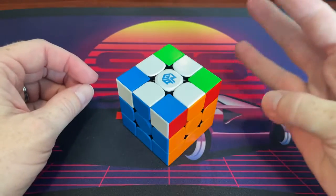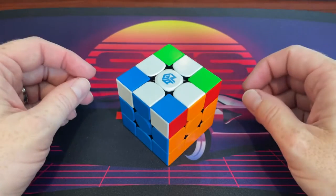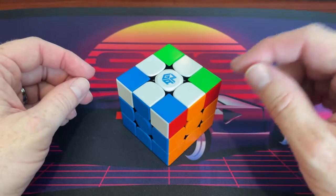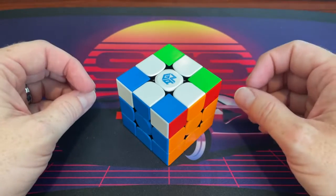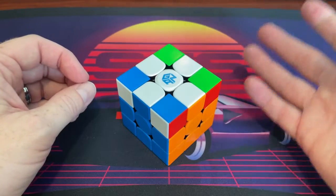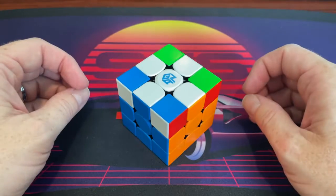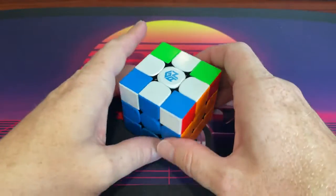OLL 21 is just three sexy moves with a setup case. Now there are some more optimal algs for this case, but as a beginner I think it'd be a lot easier to learn three sexy moves, and you can always switch it later. And the case goes like this.